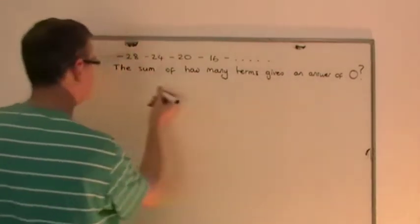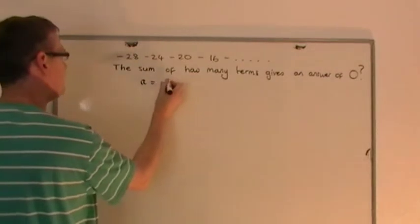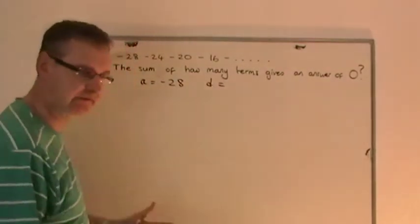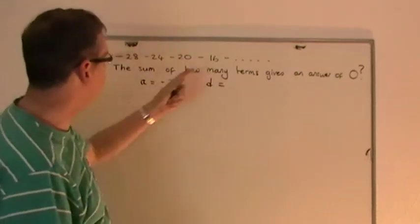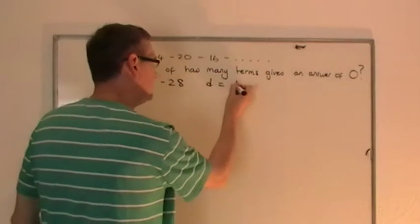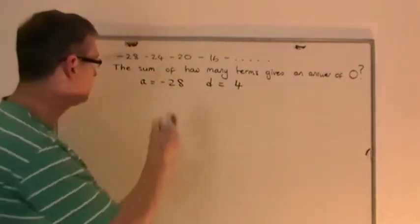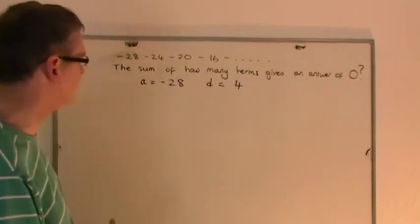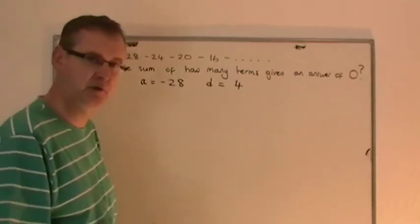Well, if you look at this, because I know what the series is, we know that a is negative 28. I also know the common difference. Now be careful, even though these are negative numbers, it's actually increasing by four each time. So the common difference is positive four. So I know those two actual values, a and d, minus 28 and positive four.